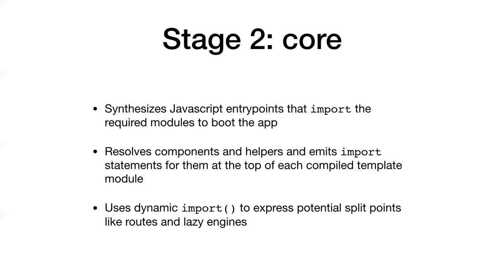Stage two is powerful because stage one did so much of the setup. By resolving all the components and helpers, we establish a complete dependency graph: the entry point JavaScript depends on application.hbs, which calls some component and imports it, which uses a helper and imports that. That whole graph ends up visible in purely JavaScript terms with imports and link tags. Where there are more complex kinds of dependency — like lazy engines, code you might need sometime but not right away — we can express that in standard JavaScript too using dynamic import.